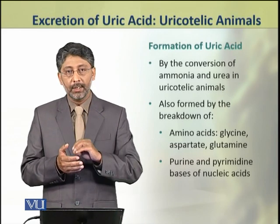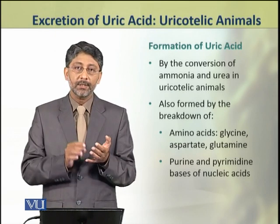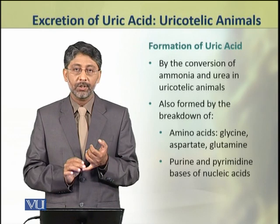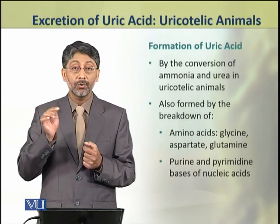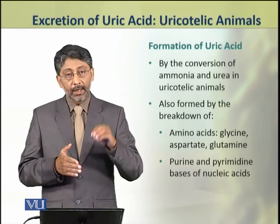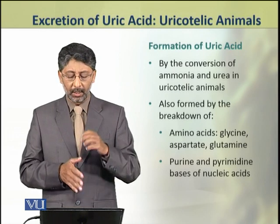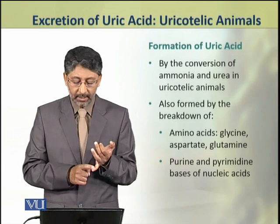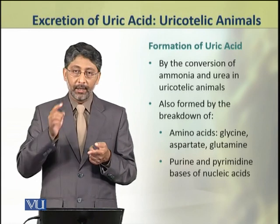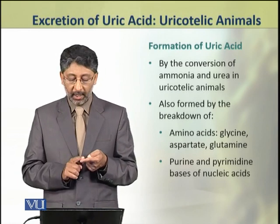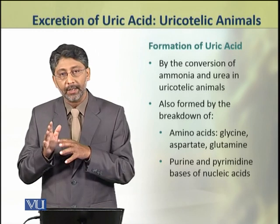Uric acid is formed by the conversion of ammonia and urea in uricotelic animals. It is also formed by the breakdown of amino acids — glycine, aspartate and glutamine. It is also formed by the metabolism of pyrimidine and purine bases of nucleic acids.